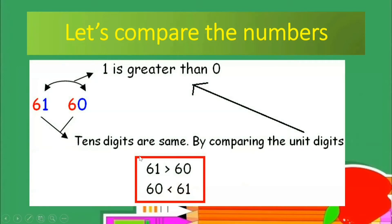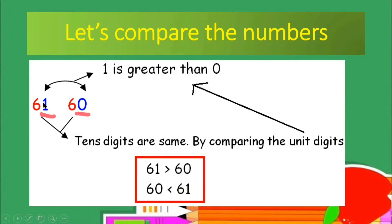Let's try another example: 61 and 60. These numbers have the same tens digit — both have six on the tens place. Since they're equal on the tens place, we have to look at the ones digit. For the first number we have one, and for the second number we have zero. One is greater than zero.